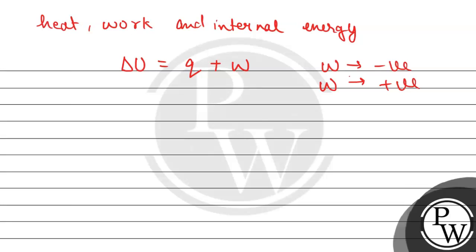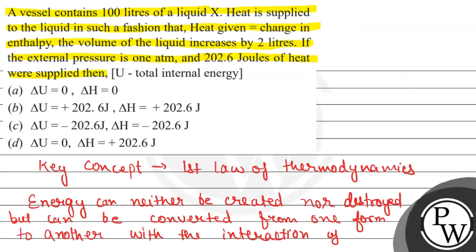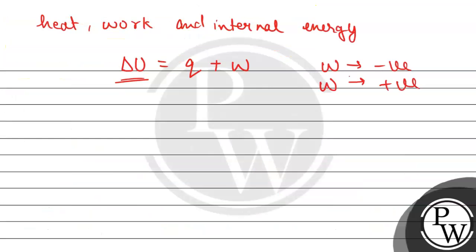Now, according to the given question, we have to find the internal energy change and along with this, we have the enthalpy change. So now, let us see the work done. We have the formula that is minus P external times delta V.